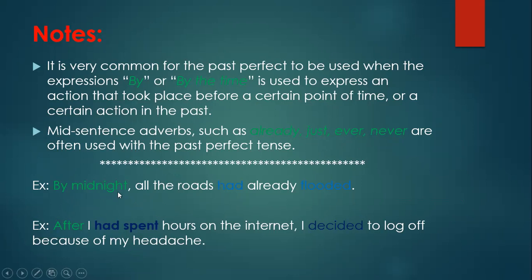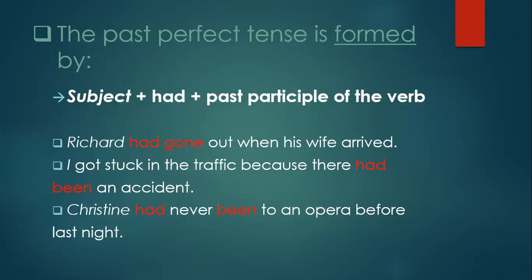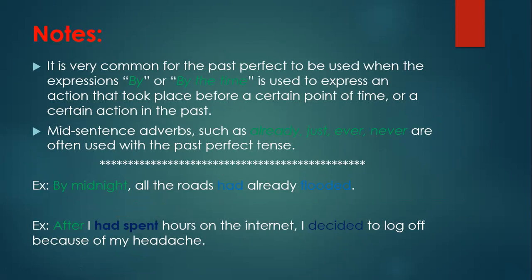For example: by midnight, all the roads had already flooded — 'by midnight' expresses the time, and 'already' is the mid-sentence adverb. Or: after I had spent hours on the internet, I decided to log off because of my headache — 'after' is used with the past perfect. And as shown in the previous slide, 'never' is also an adverb used in the middle of the sentence with the past perfect tense. Ever, never, just, and already are all such adverbs.